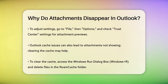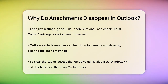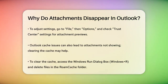Outlook cache issues can also cause problems. Clearing the cache can sometimes resolve the issue. To do this, open the Windows Run dialog box by pressing Windows+R, type %LocalAppData%\Microsoft\Outlook\RoamCache, and delete all the files in that folder.